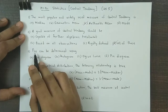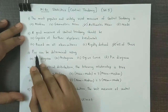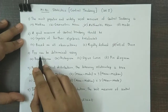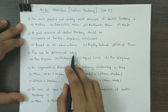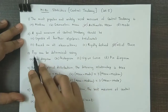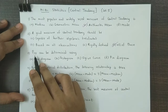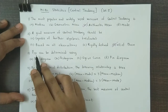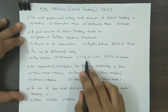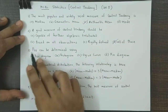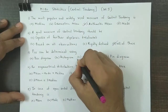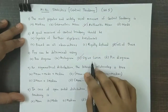Question 3: P75, that is percentile 75, can be determined by — percentiles, quartiles, deciles, and other partition values can be easily obtained with the help of ogive curves. So the answer for question 3 is option C.